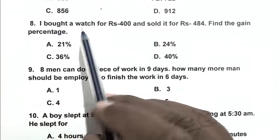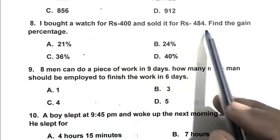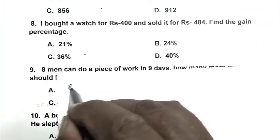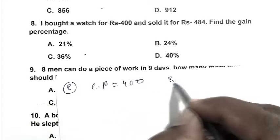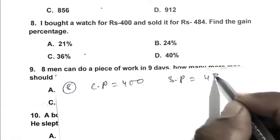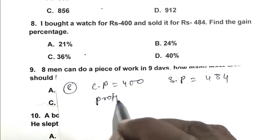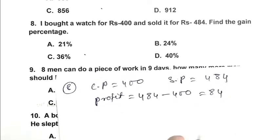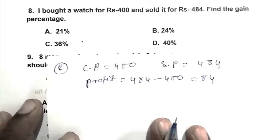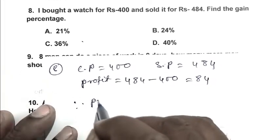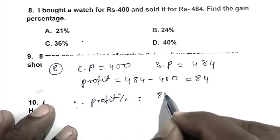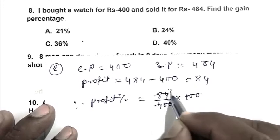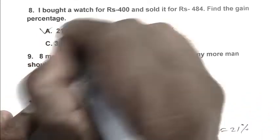Question number 8: I bought a watch for Rs. 400 and sold it for Rs. 484. Find the gain percentage. Cost price is Rs. 400, selling price is Rs. 484. So profit is Rs. 484 minus Rs. 400, that is Rs. 84. Profit percentage equals profit by CP multiplied by 100, which gives us 21%. So A is the right answer.